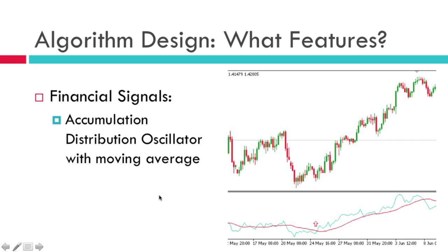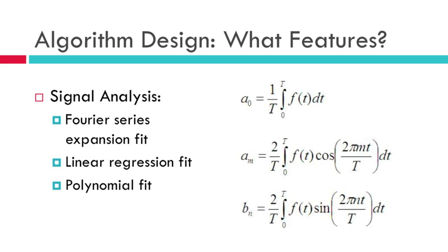Here are some features we could use. We could use financial signals — one is the accumulation distribution oscillator. Here's an example: at this crossover point it crosses the moving average, so we may want to enter here, and we could give this feature to the algorithm to see if it helps prediction accuracy. Or we could use something more mathematical like a signal analysis feature — maybe a Fourier series expansion fit, a linear regression fit, polynomial fits — there's just a huge range of mathematical functions we could use as features for a classification algorithm.